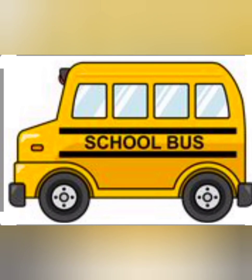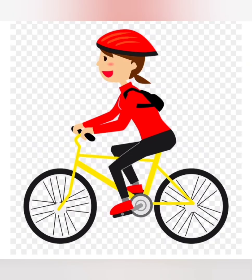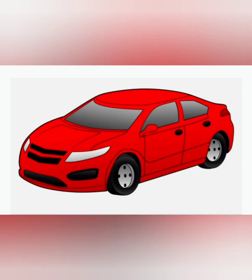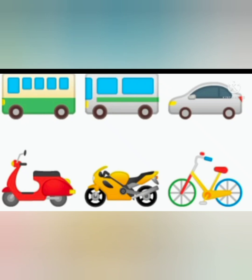Good morning children. Most of us use different modes of transport to come to school like bus, cycle, scooter, motorcycle, car etc. All these modes of transport are of different shapes and sizes, but there is one thing which is common in all these modes of transport. Can you find out? Yes, it is the wheels.